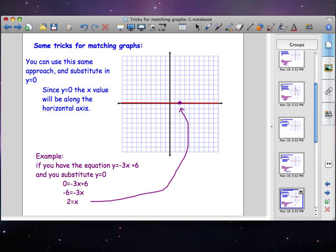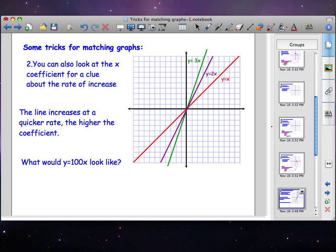Another trick you can use is to look at the coefficient on the x. As you can see on the red line when y is equal to x, if there's no coefficient in front of the x, you can assume that the coefficient is 1. So the line for 1 is less steep than the line for 2, and the line for 2 is less steep than the line for 3.